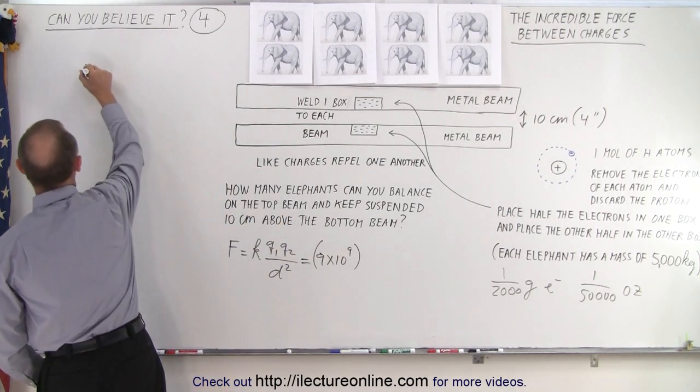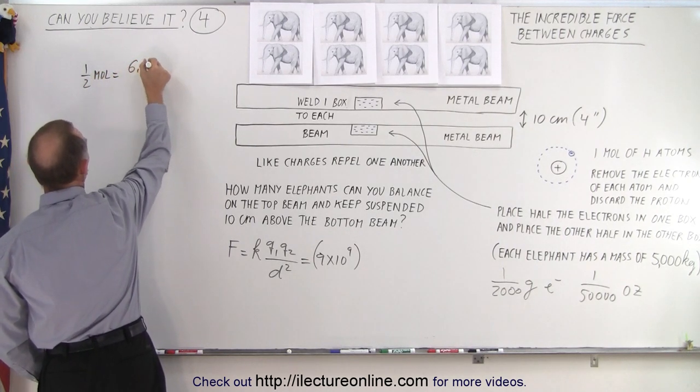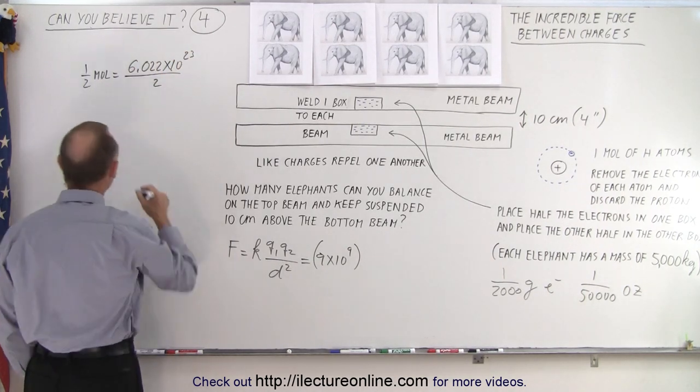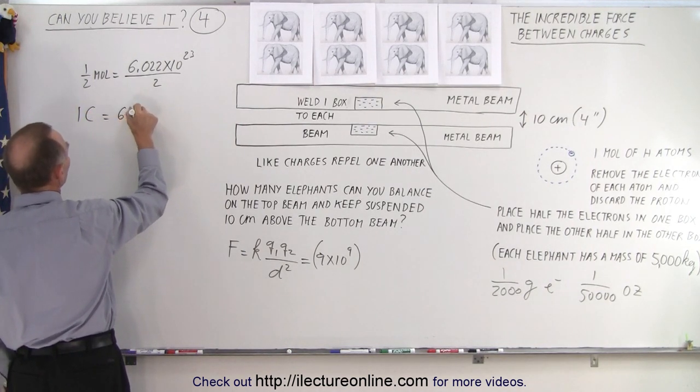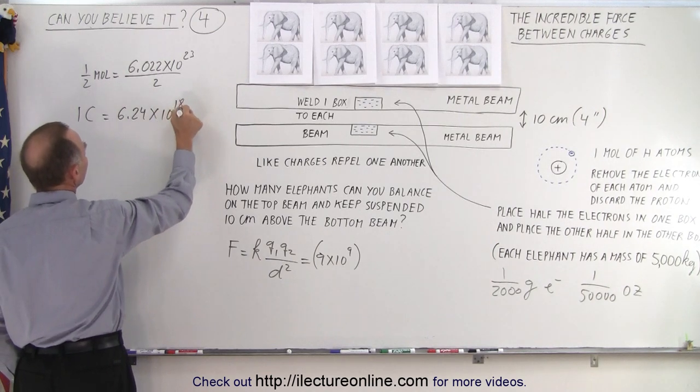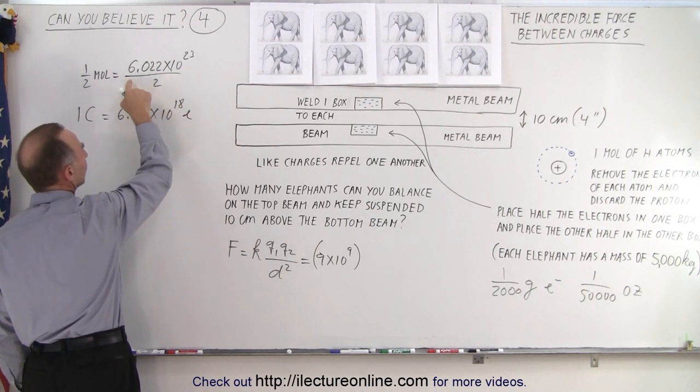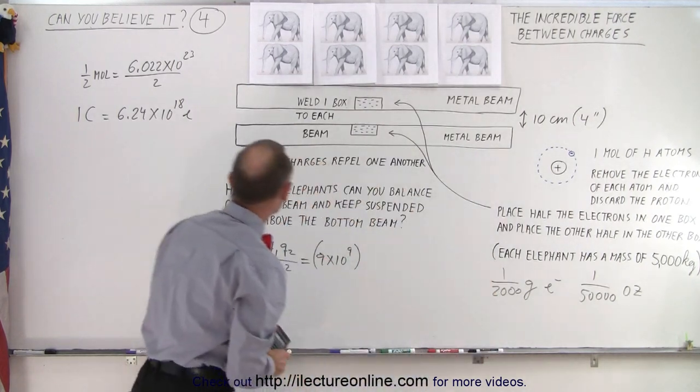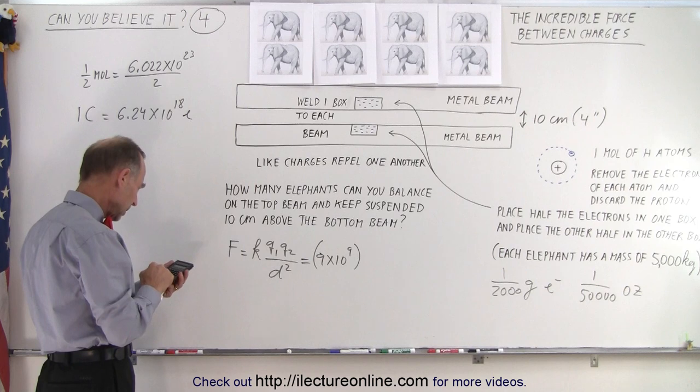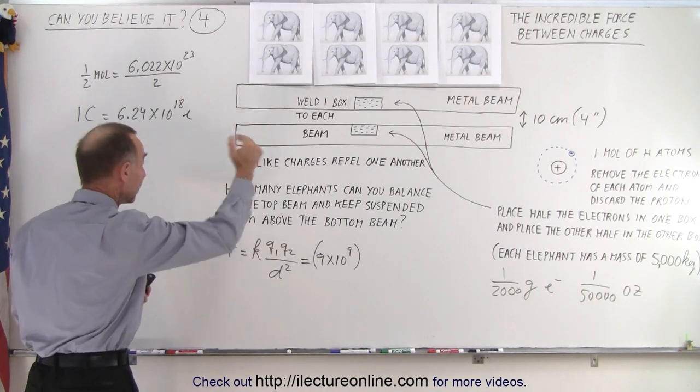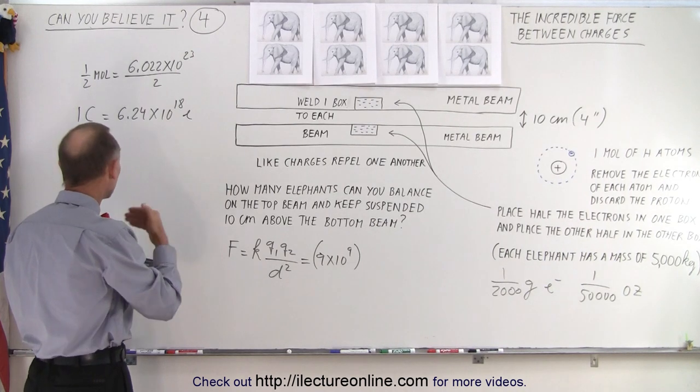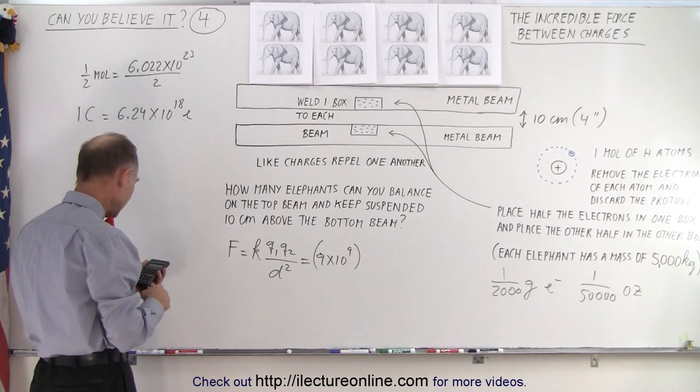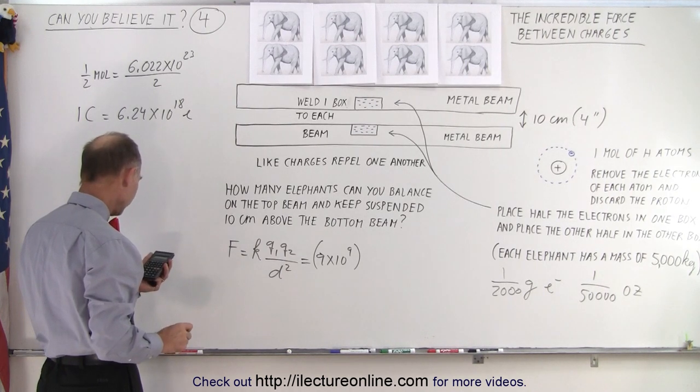Now we have to find how many coulombs of charge a half a mole of electrons is. Half a mole is equal to Avogadro's number, 6.022 times ten to the twenty-third divided by two. One coulomb is equal to 6.24 times ten to the eighteenth electrons. So if we divide this number, roughly three times ten to the twenty-third divided by this number, we get the number of coulombs. So we're going to take 6.022 e to the twenty-third divided by two, divide that by 6.24 e to the eighteenth. And that leaves me with 482,532.